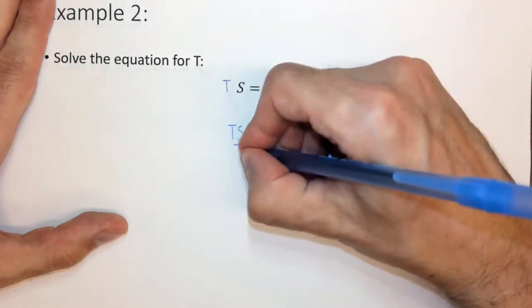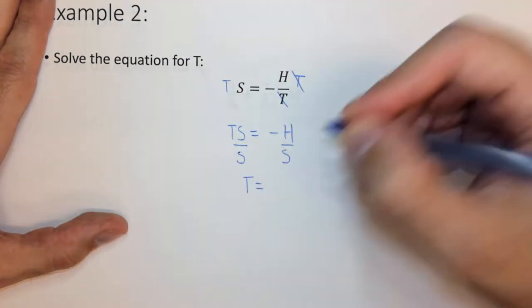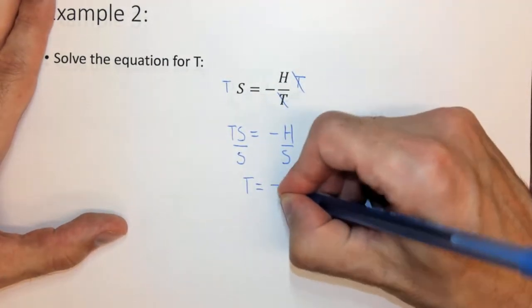Now divide both sides by S, divide by S, T equals negative H over S.